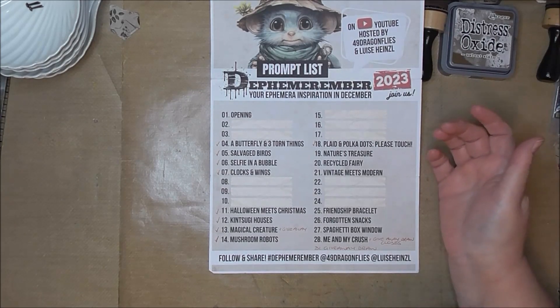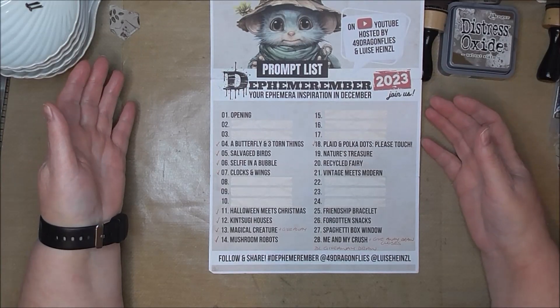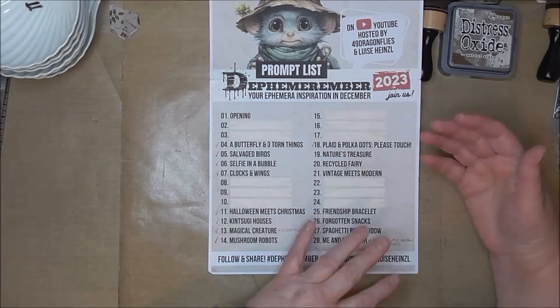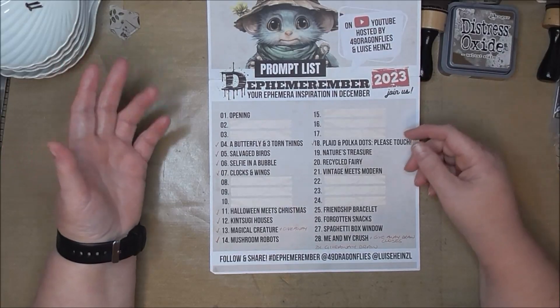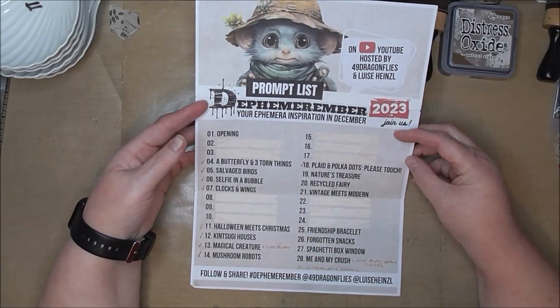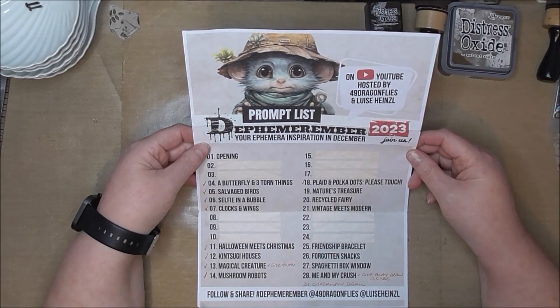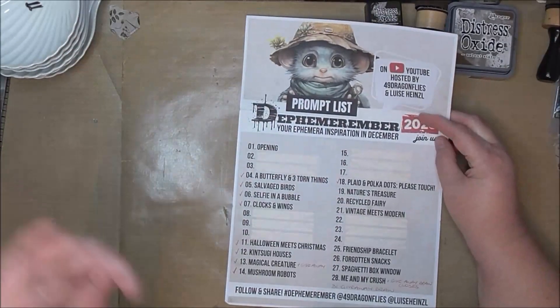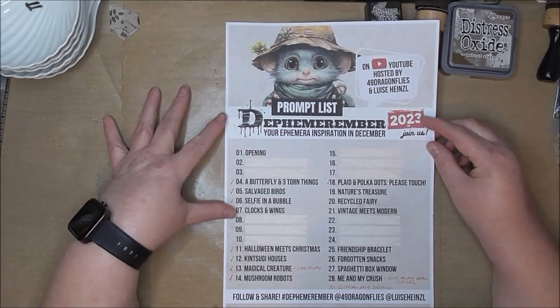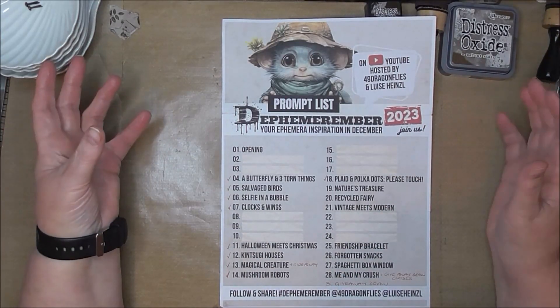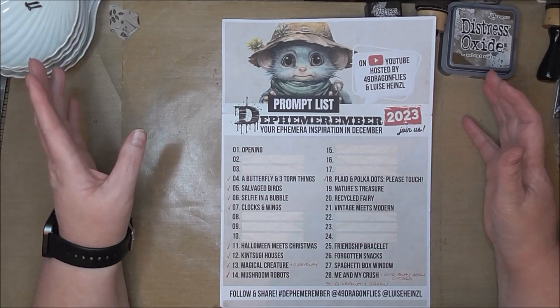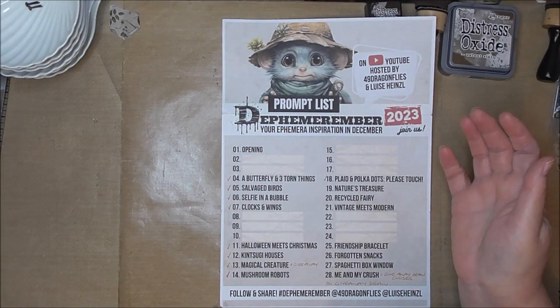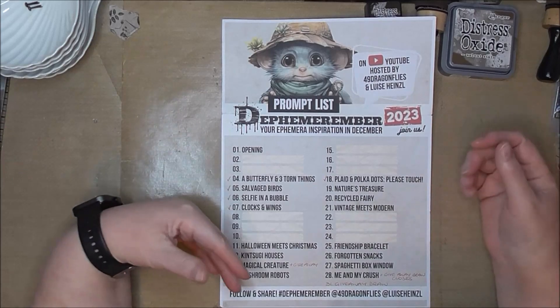When I saw this prompt, I thought about the different things that I could consider nature's treasure, and in the end, it came down to one thing alone. And that is gemstones, and sort of crystals, that type of thing. Because my daughter collects them and has got an amazing collection.